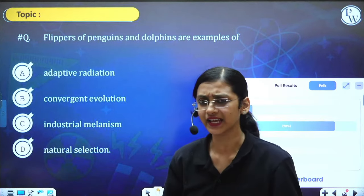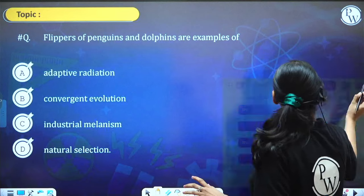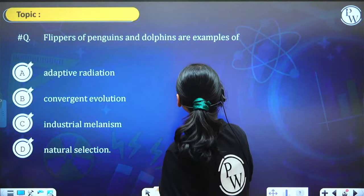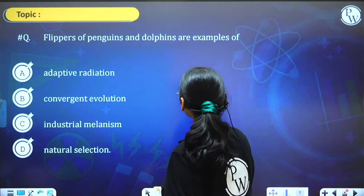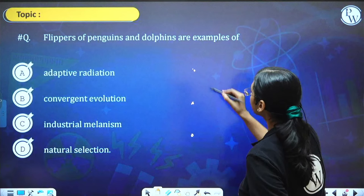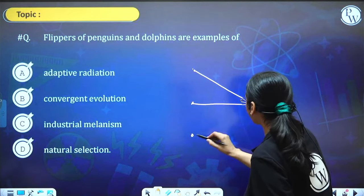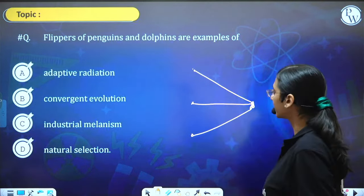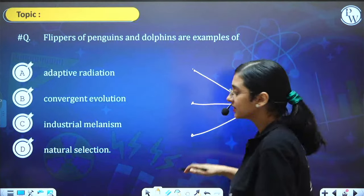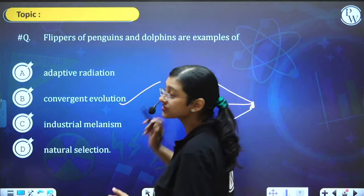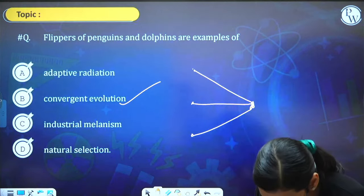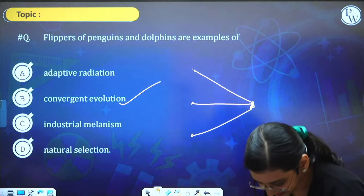The evolution that results from analogous structures is convergent evolution. Analogous structures are structures that have different origin but a common function. So the answer must be convergent evolution. Have you understood?